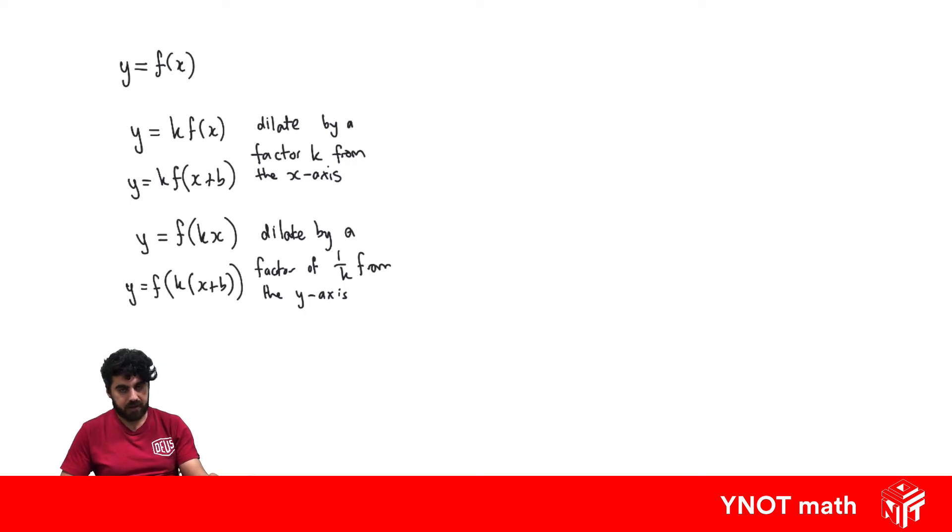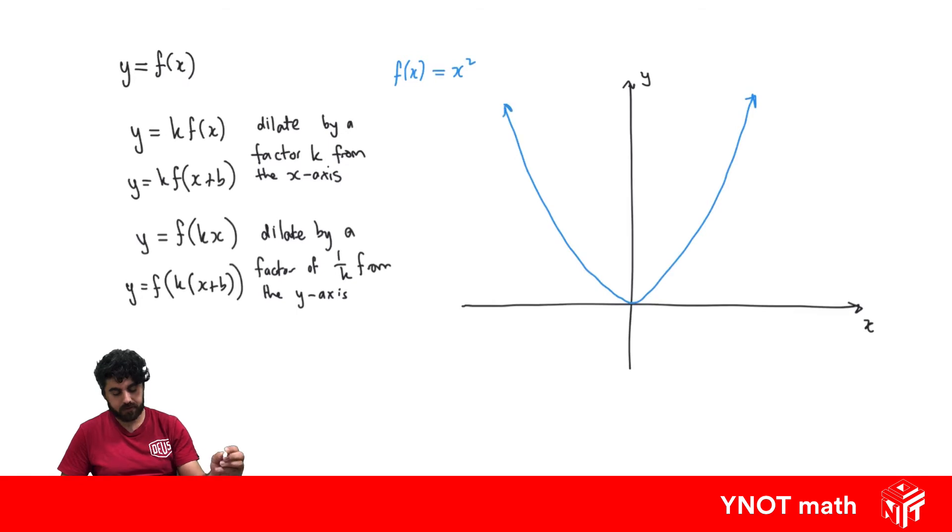To make better sense of this, we need to look at some examples. Let's draw up our xy-axis. Let's start off with f of x equals x squared and sketch it out. We're just going to get our parabola looking something like that.